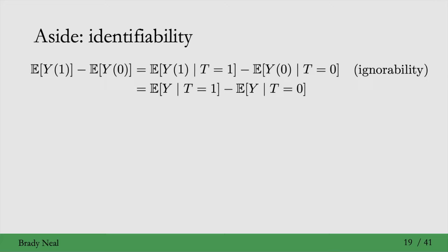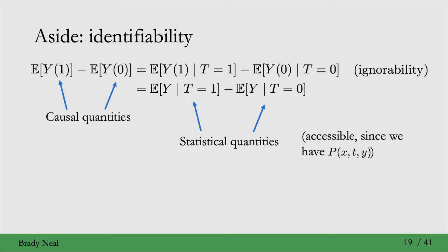So here we have the proof that we used, where we used ignorability to show that the average treatment effect is equal to the associational difference. The important thing is that the average treatment effect is a difference between two causal quantities, whereas the associational difference is a difference between two statistical quantities. So identifiability is going from causal quantities to statistical quantities.